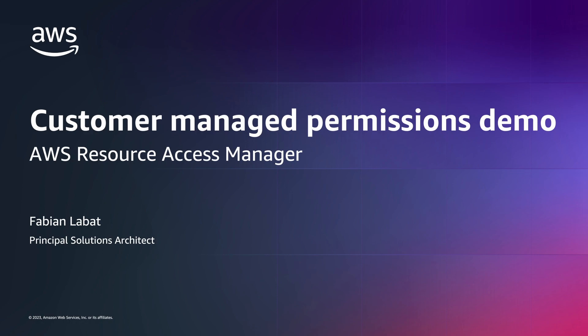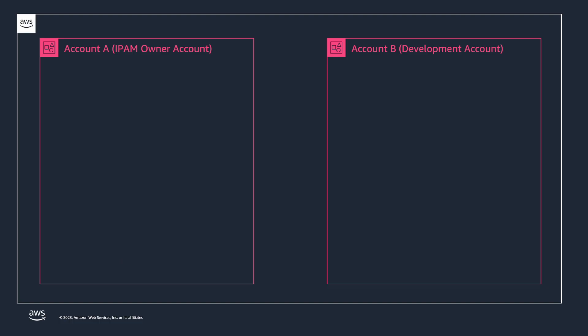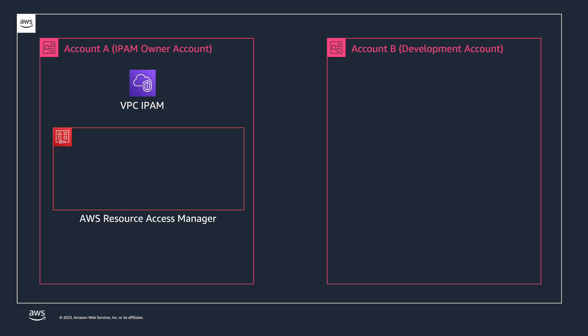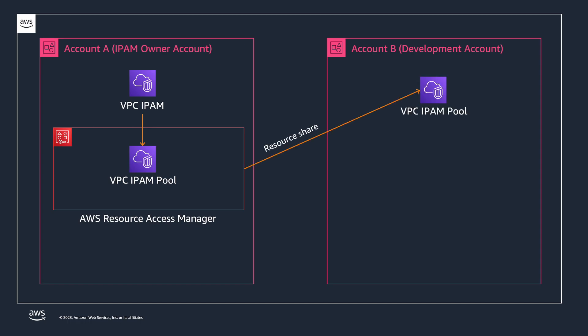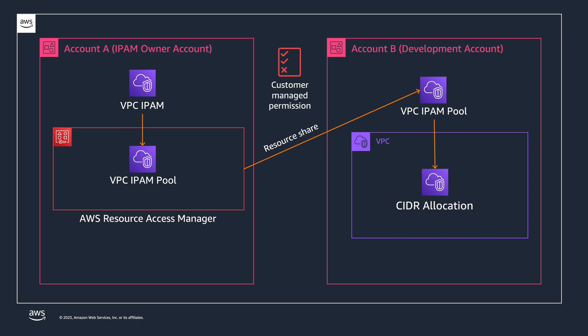With Customer Managed Permissions, you can tailor access to specific functions or tasks and follow least-privileged best practices by configuring fine-grained access control to your shared resources. In my example, I'll use AWS Resource Access Manager to share an IP address manager pool from account A, the owner of the IPAM pool, with account B, a development account that can create VPCs using the IP address allocations from the shared pool. I'll use a Customer Managed Permission that allows the development account to allocate IP ranges but does not allow viewing the shared IPAM full details like pool size or utilization.